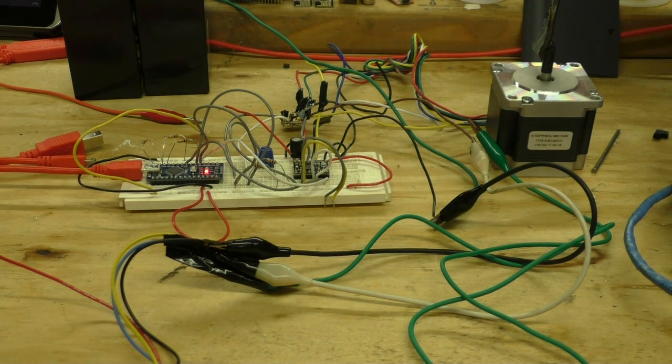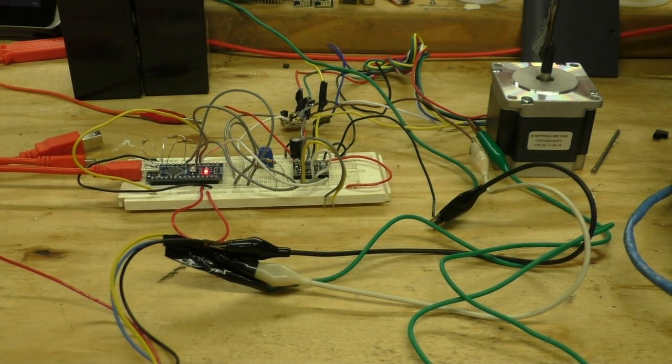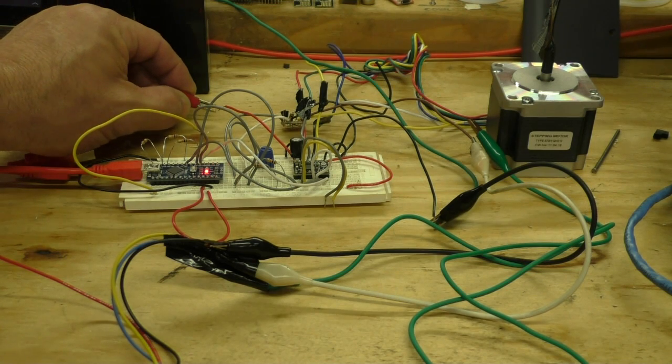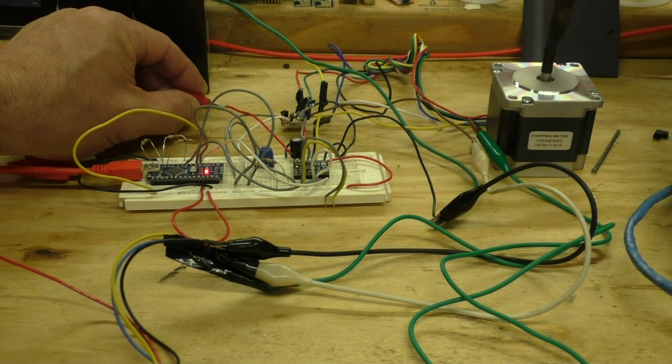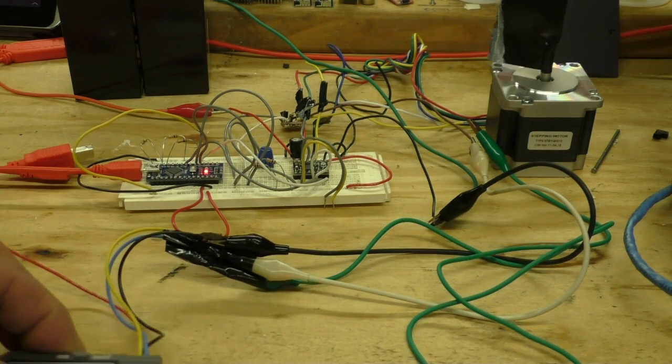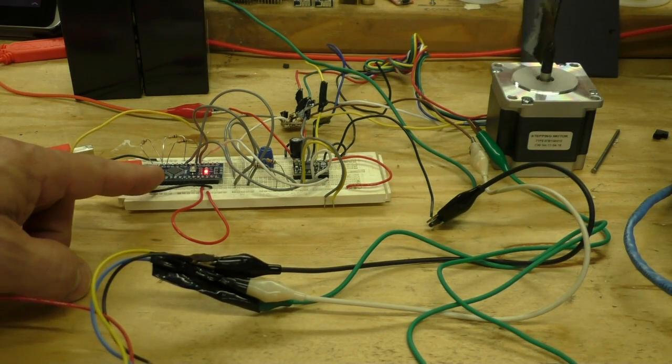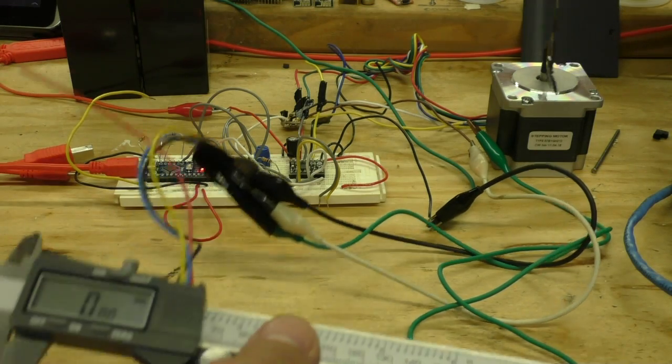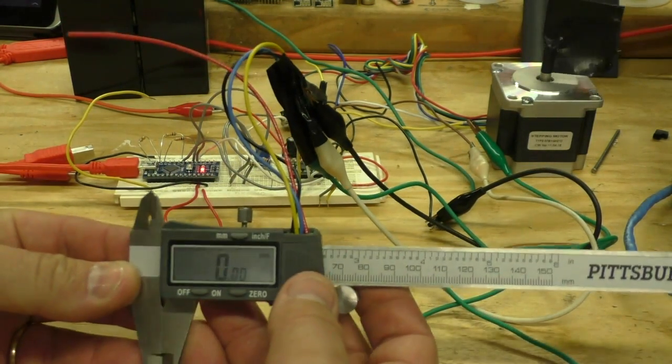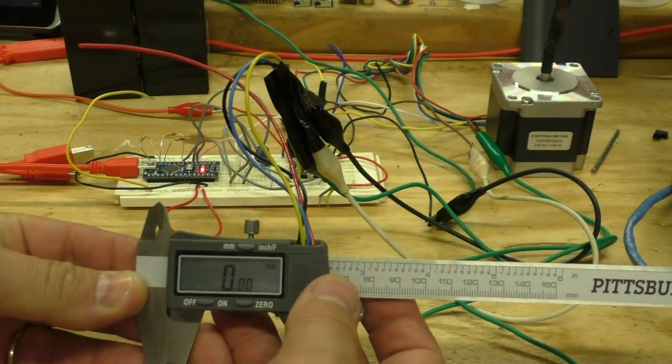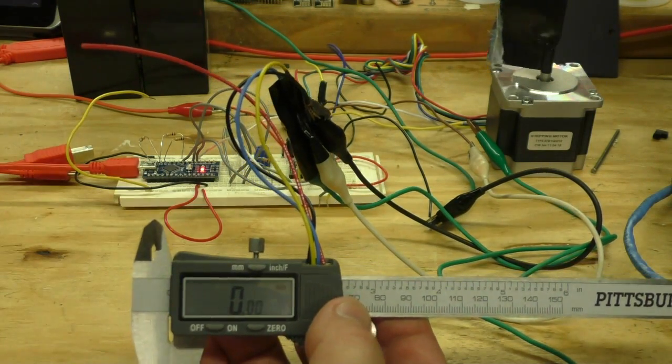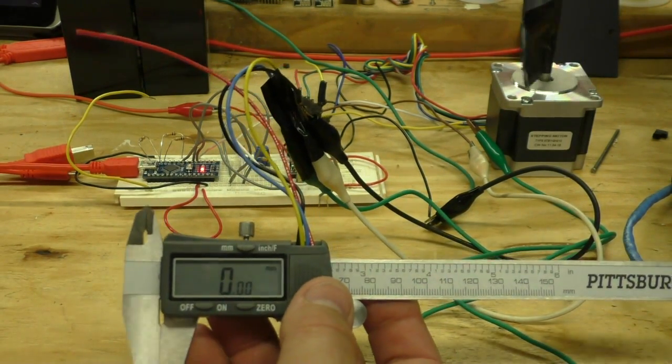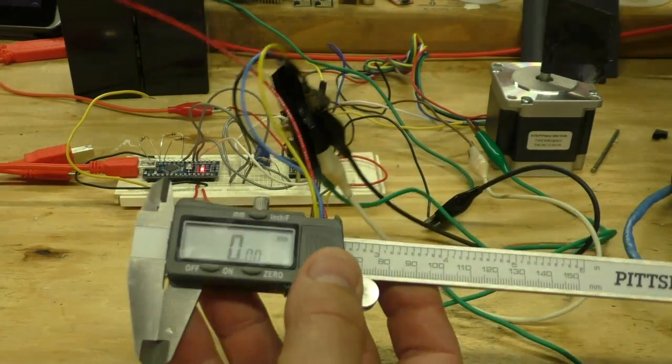Now there's a PID algorithm running on the Nano along with my caliper code, so it's reading these calipers and the PID algorithm is proportional. If this size changes slowly, it's going to slowly speed up or slow down the motor.